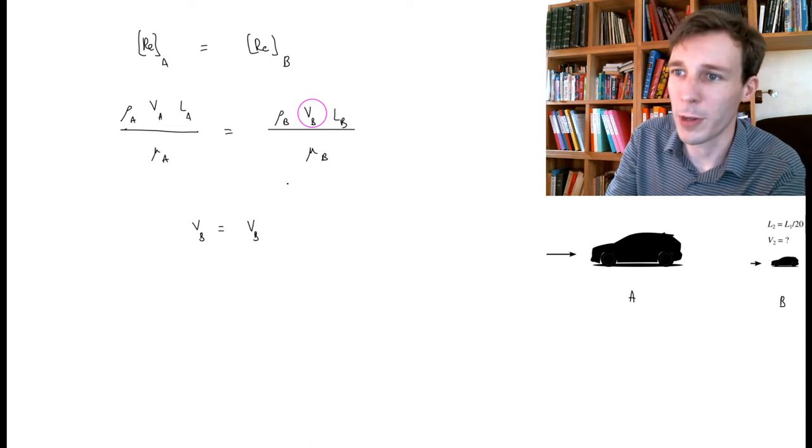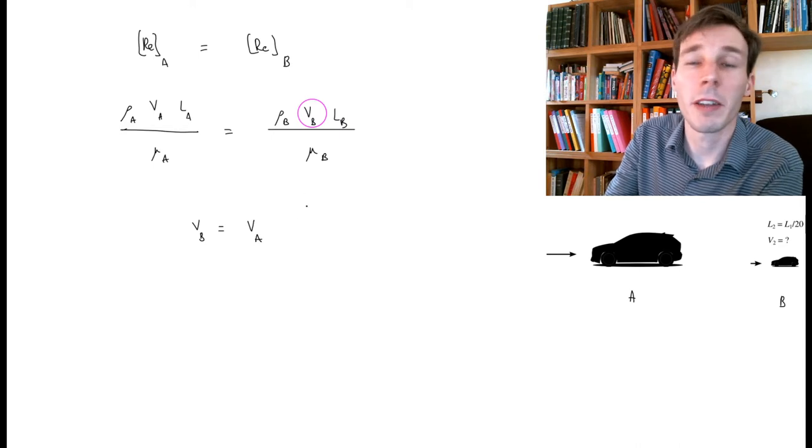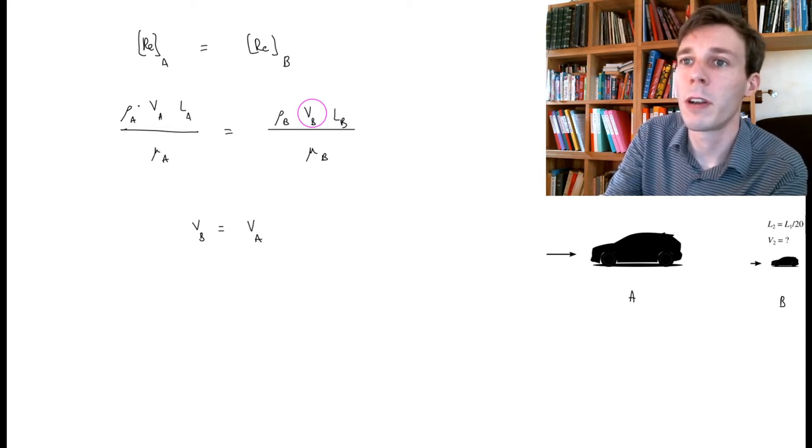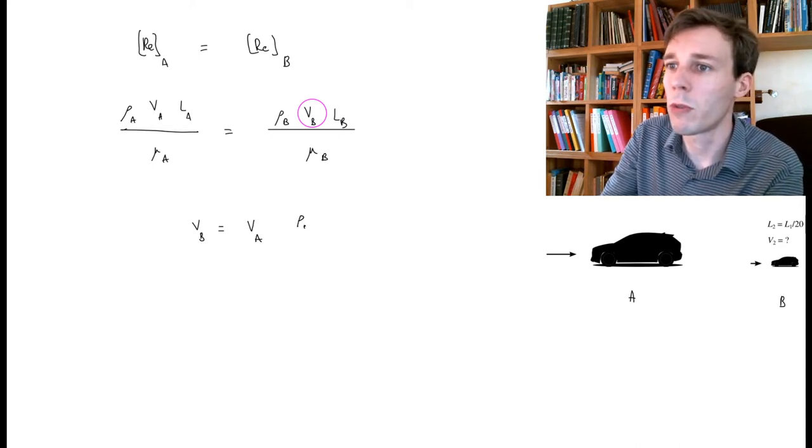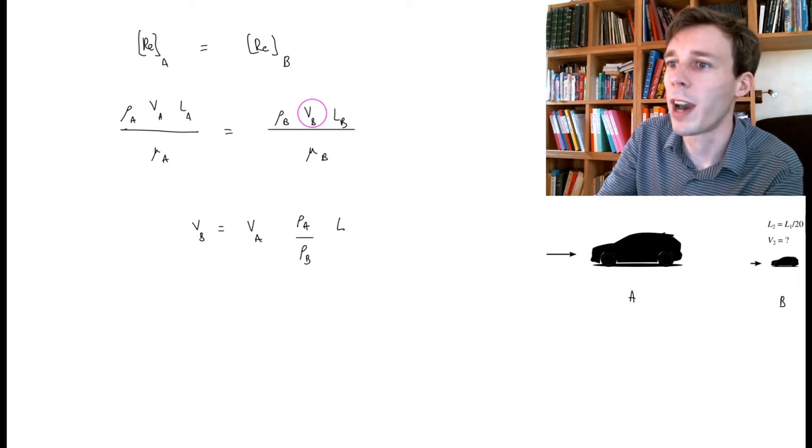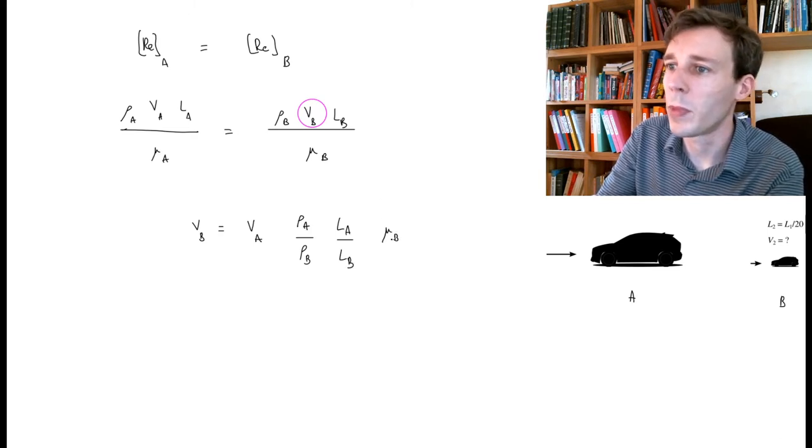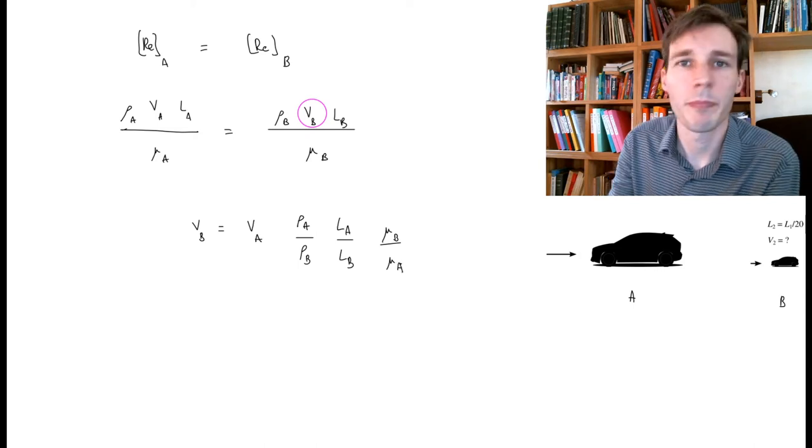So VB is equal to VA multiplied by a series of factors. And these factors are ρA over ρB, and then L_A over L_B, and then μB over μA.